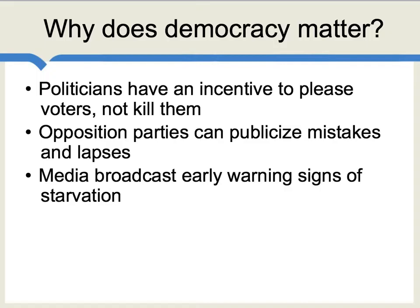It's easy to imagine why this might be. Politicians have an incentive to please voters in a democracy and get their votes, not to kill them or to make them hungry. Furthermore, if a famine is arising or about to arise, opposition parties can publicize the mistakes of the ruling regime, make this a campaign issue, and generate voter support in their favor. That, of course, induces the incumbent parties to do something about the potential famine.